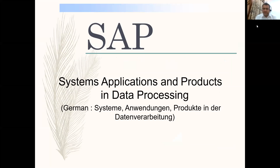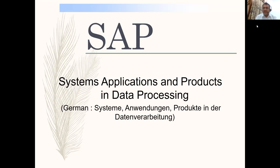Now coming to SAP. What exactly is SAP? First of all, SAP is a company and their product name is also SAP. SAP stands for Systems, Applications and Products in Data Processing. This is a German company almost 40-50 or more years old. One important note — many people refer to it incorrectly. It is called SAP and should be pronounced as SAP only.